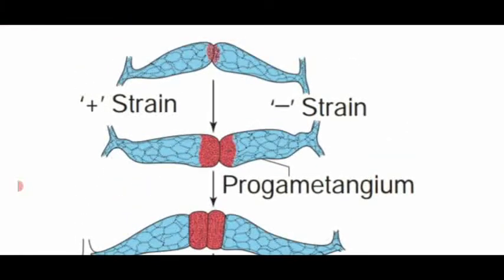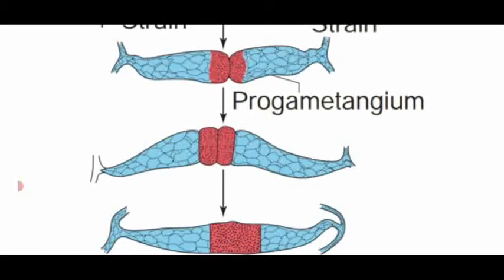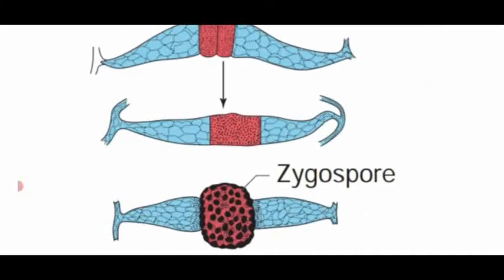There are two strains — plus strain and minus strain. At the tip of each strain they produce gametangia. Both gametangia fuse together and the partition wall is destroyed to form the pro-gametangium. The protoplasmic content and the nuclei fuse together to form a diploid zygospore with a diploid nucleus.